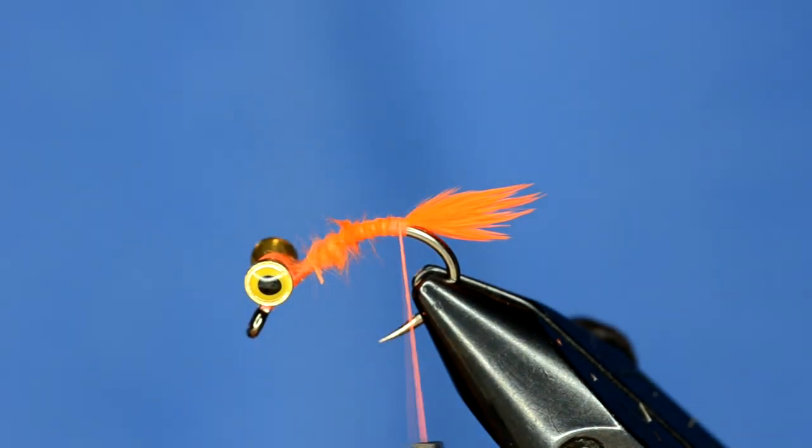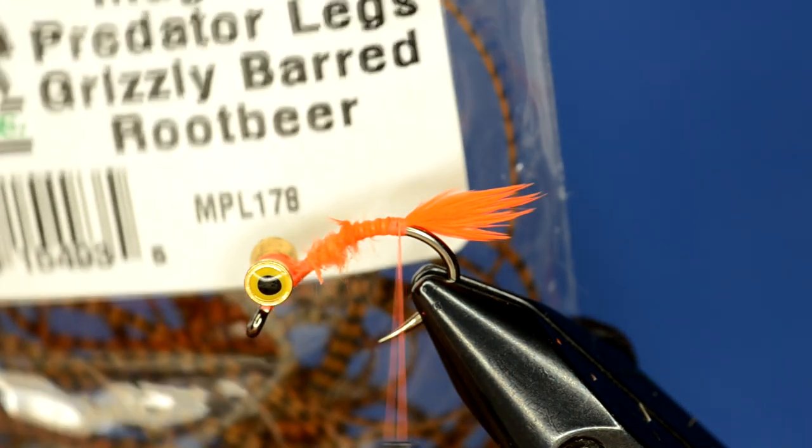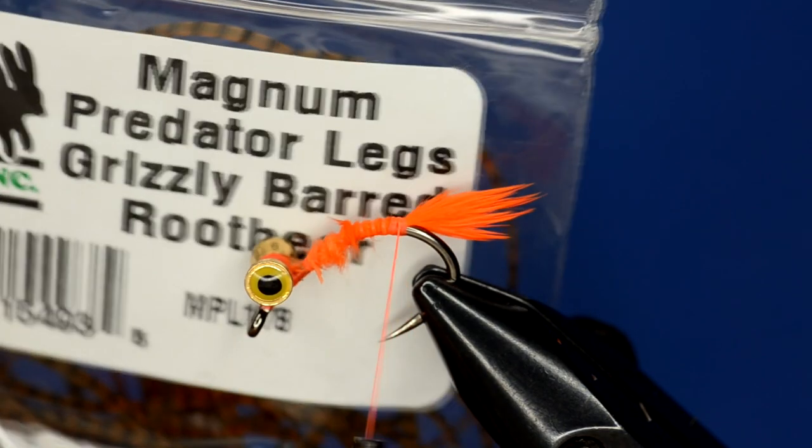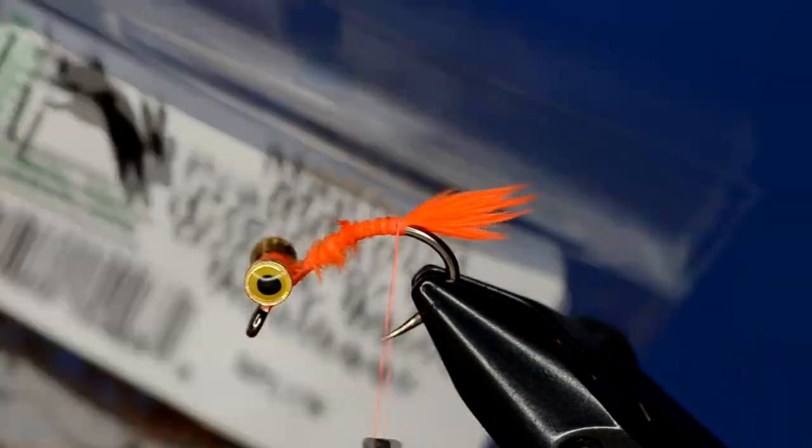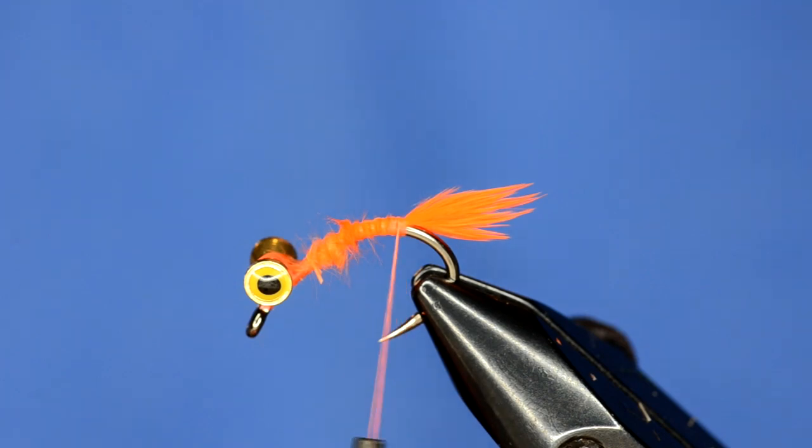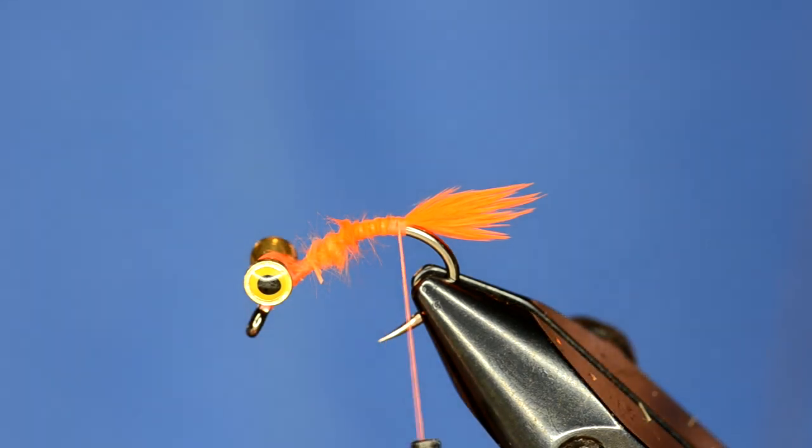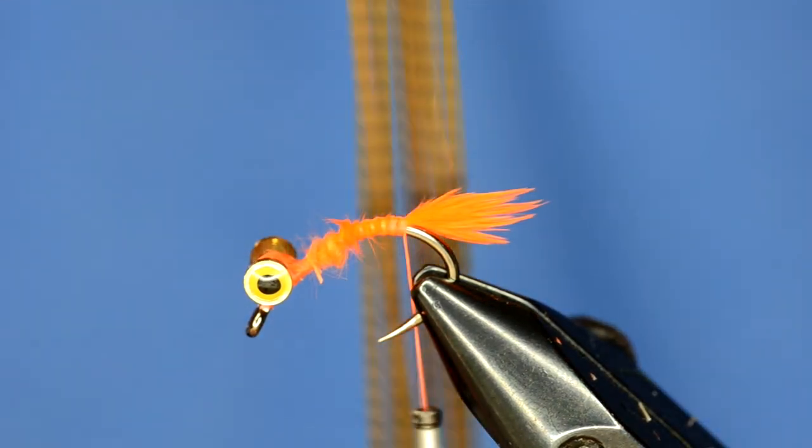All right, another cool product that's brand new from Hairline is this Magnum Predator Legs. These are basically like silly legs but they're twice as wide and they're super long too. So we won't take advantage of the length of these right now but as you can see they are long.